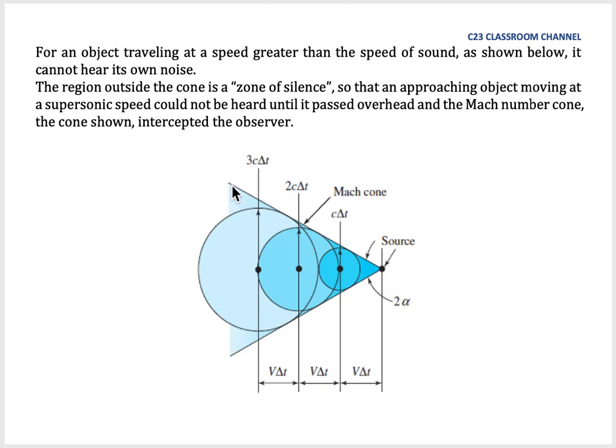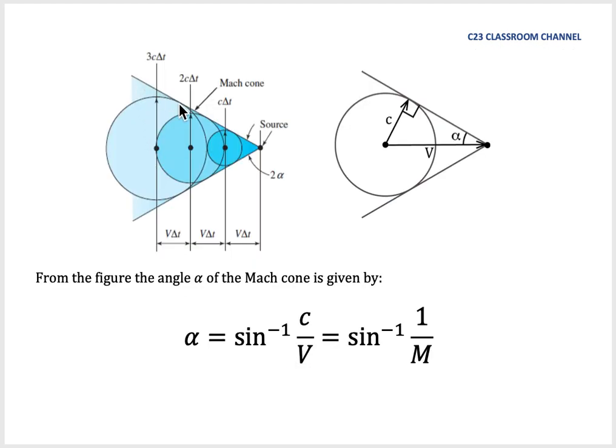We call the formation of triangle here as Mach cone. This is the formation of Mach cone from the previous slide. We could simplify our drawing like this. We take the largest sound wave here and draw a circle. The distance from here to here can be represented as V, which is the speed of the source.